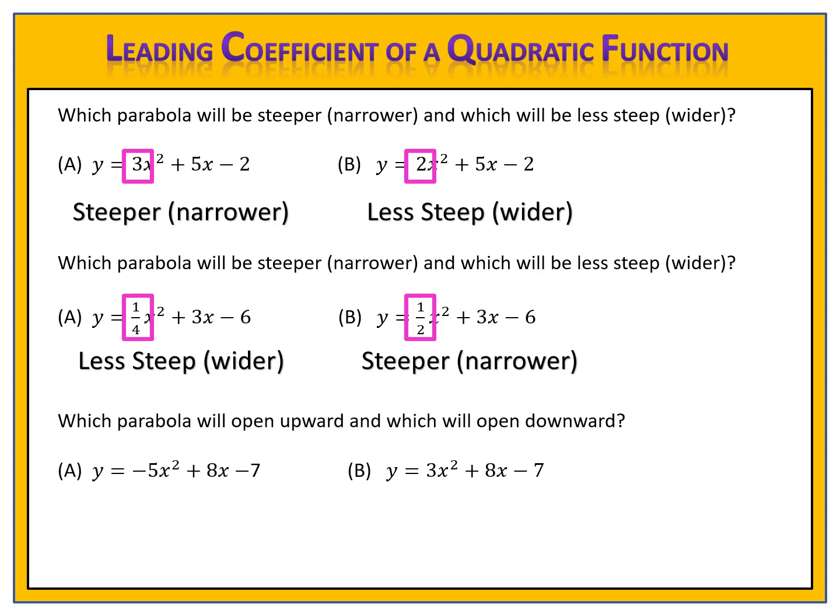Let's try one last exercise. Here are two functions, function A and function B. Which will have a parabola that opens upward, and which will have one that opens downward? To compare these, we look at the leading coefficients. If a graph has a positive leading coefficient, the parabola will open upward. If the quadratic function has a negative leading coefficient, the graph will open downward. Function A has a leading coefficient of negative 5, so its parabola will open downward. Function B has a positive leading coefficient, so it will open upward.